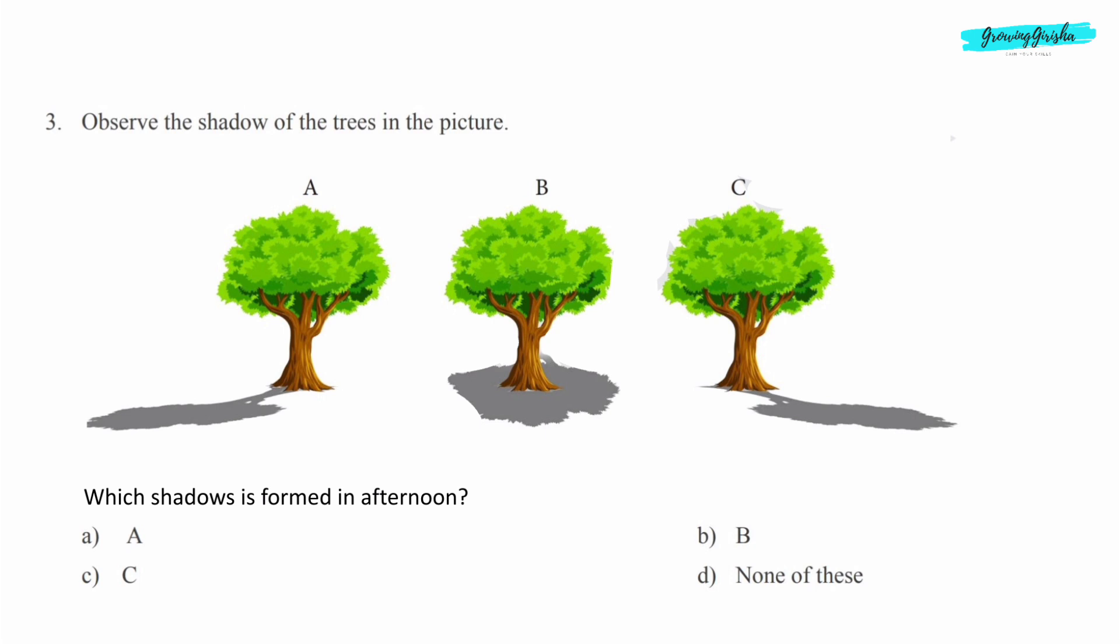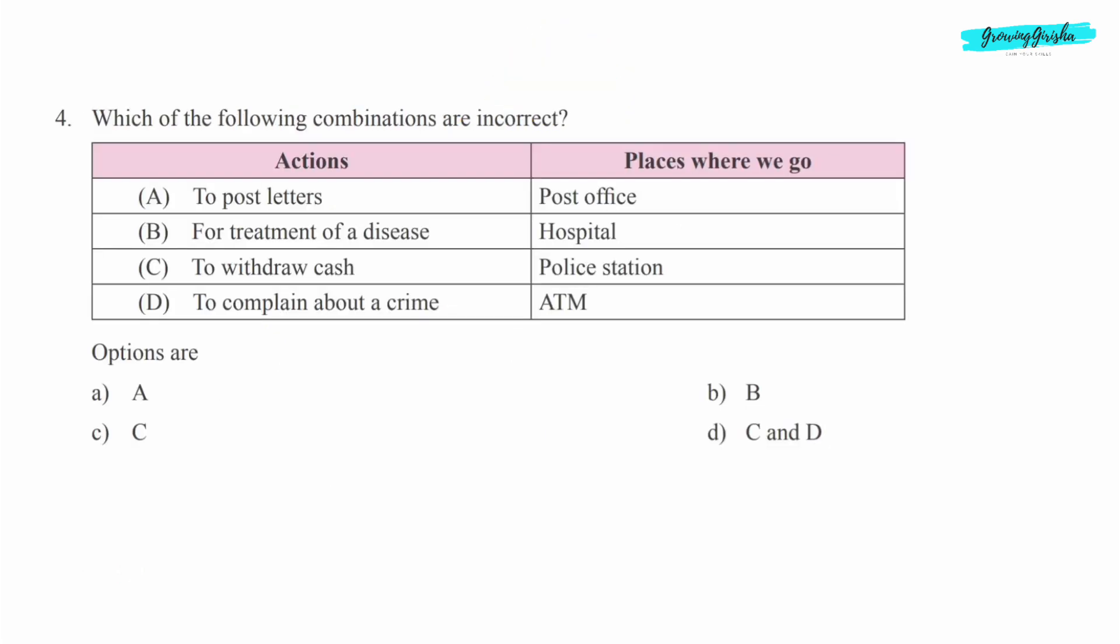Tree B, because the sun is right above the tree in the afternoon. Which of the following combinations are incorrect?